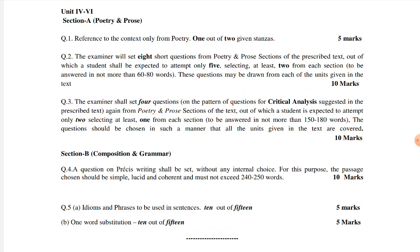Question number 2: The examiner will set 8 short questions from poetry and prose sections of the prescribed text, out of which a student shall be expected to attempt only 5, selecting at least 2 from each section to be answered in not more than 60 to 80 words. These questions may be drawn from each of the units given in the text. Question number 2 is of 10 marks.